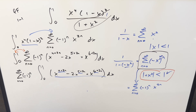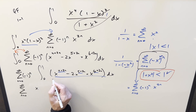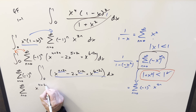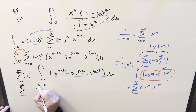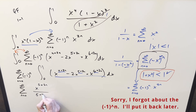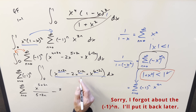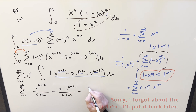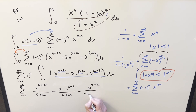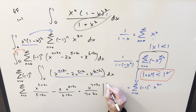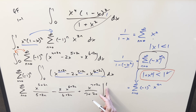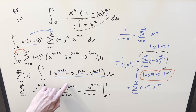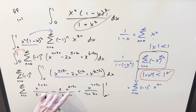This is all just power rule, so let's integrate quickly. The first term gives x to the (5+2n) over (5+2n), the second term gives x to the (6+2n) over (6+2n), and the last gives x to the (7+2n) over (7+2n). Evaluating from zero to one — at zero everything zeroes out, and at one every x-power equals one — so we just replace all x terms with one.